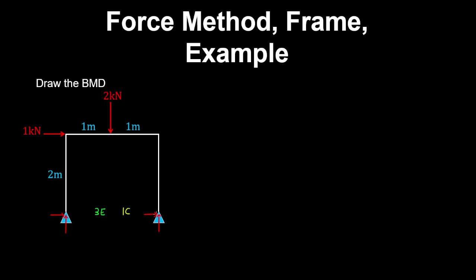What we're going to do is find the horizontal reaction at the roller first. We're going to release the translation in the horizontal direction, and therefore we superimpose two cases: which have a pin on the left and a roller on the right.